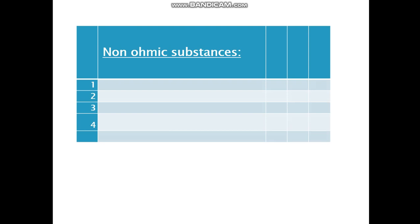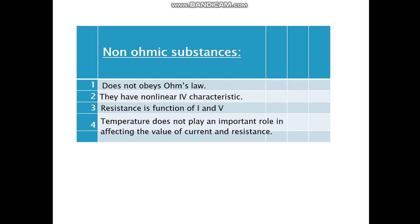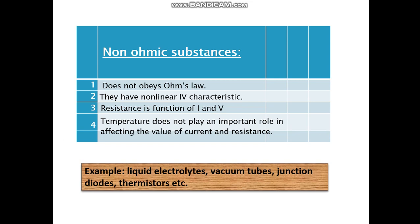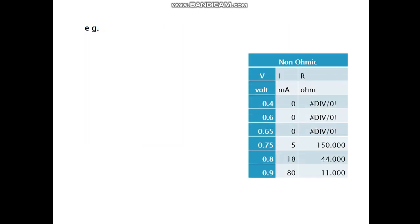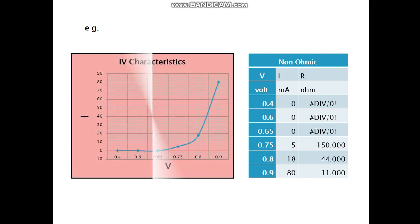Non-ohmic substances then will not obey Ohm's law. So does not obey Ohm's law. They have non-linear IV characteristics. Resistance is a function of I and V. Temperature does not play an important role in affecting the value of current and resistance. Examples are liquid electrolytes, vacuum tubes, junction diodes, thermistors, etc. So if you plot a graph again, the IV graph, you see R is not constant in the table. So you get a graph like this for this particular one. There are many other IV characteristics for different resistors. This is one of the examples.